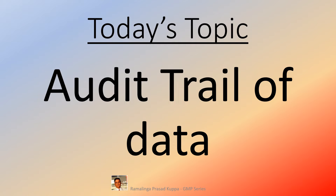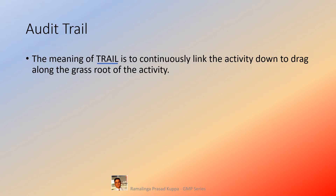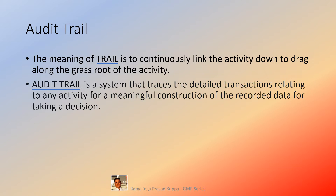Let us understand what is audit trail. The meaning of 'trail' is to continuously link the activity, to drag along to the grassroot of the activity. Do not get confused with the similar word 'trial' — trial means experiment or attempt. Trail means linking the calendar of events, linking the final data with the initial data point, that is the first starting point of the data generation, through subsequent transformations to next stages till it reaches the final step.